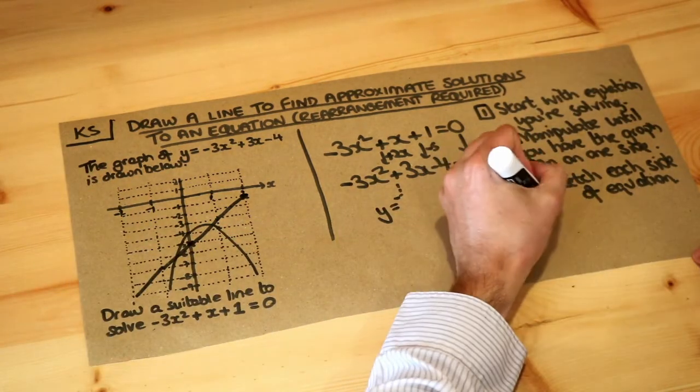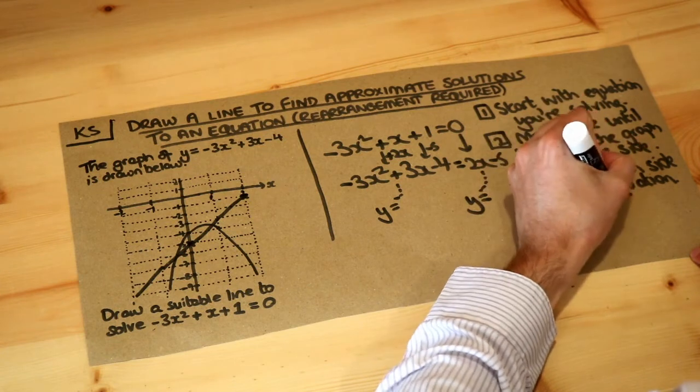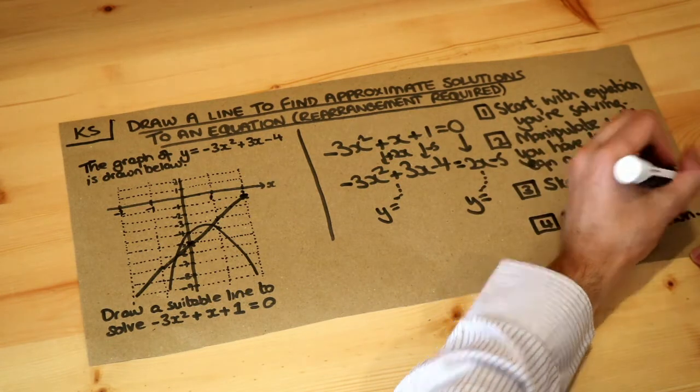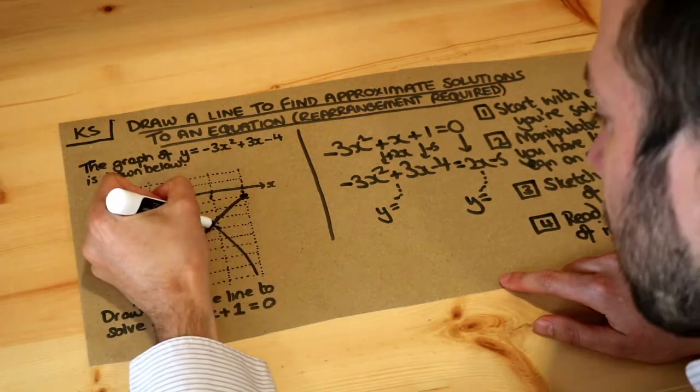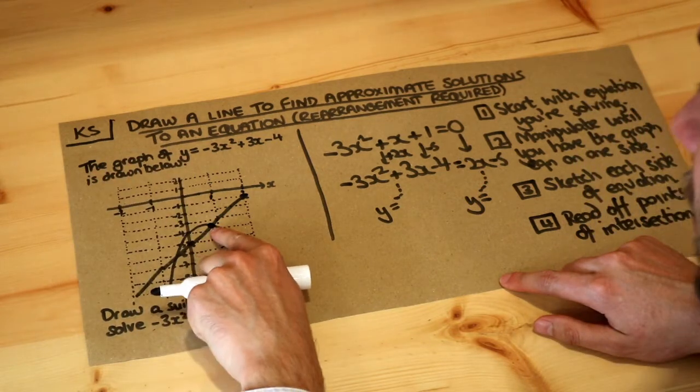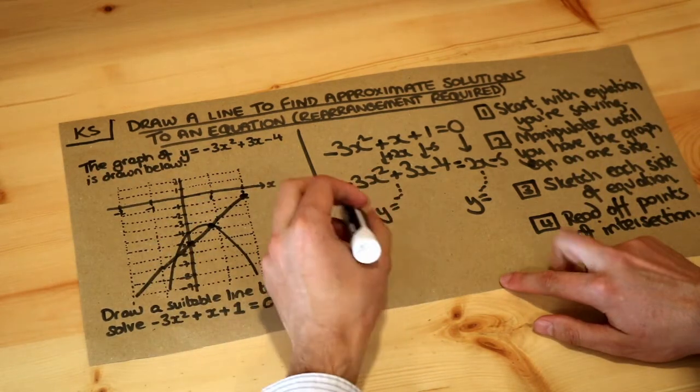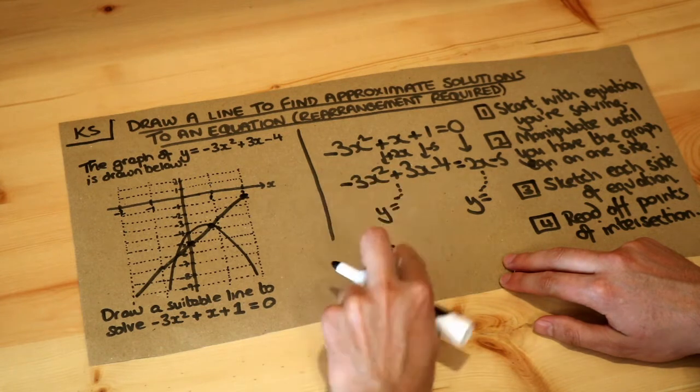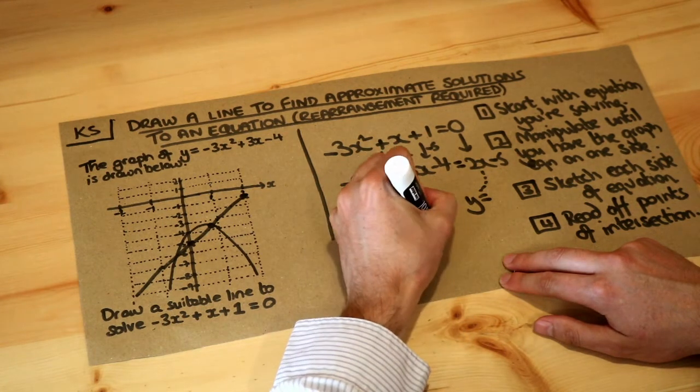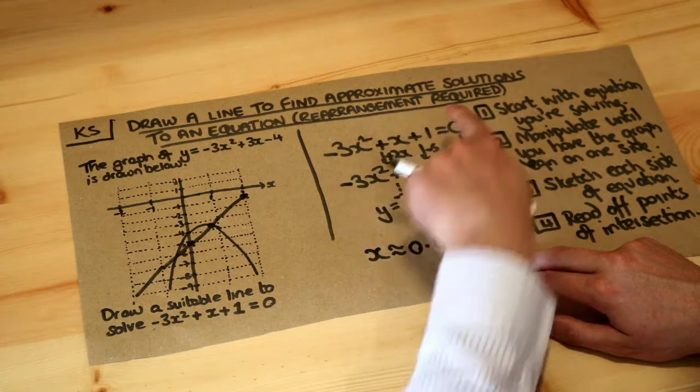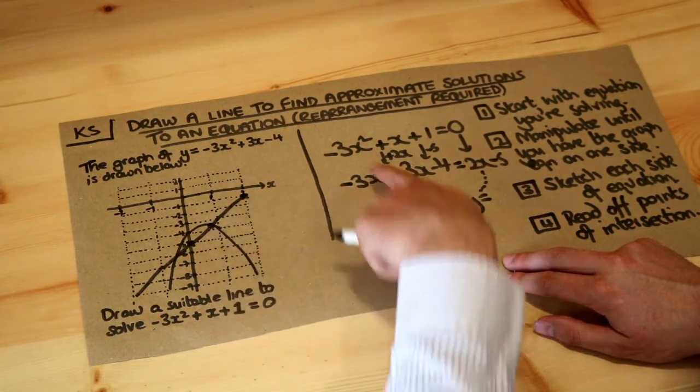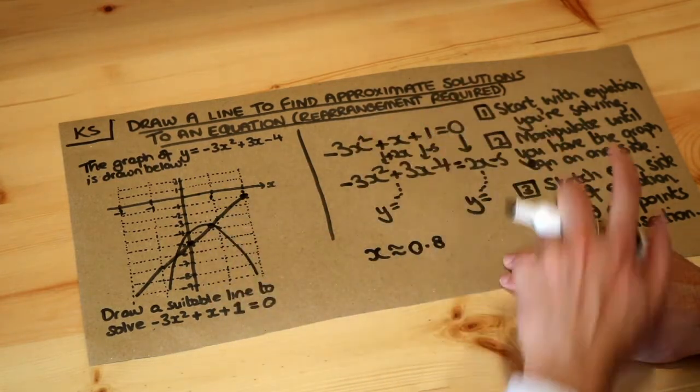The final step is to read off the points of intersection. You can see there's a point of intersection here, and x is roughly, I'd say, 0.8, so x is approximately 0.8. Remember, we're only solving the equation in terms of x—we don't actually care what the y value is; we only care what x is because we're solving for x.